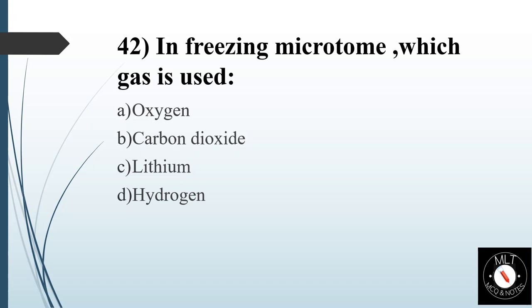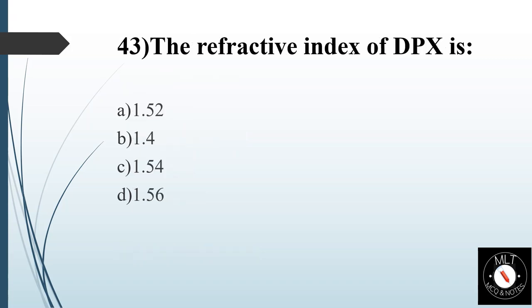Forty-second question. Anaerobic microorganism — which gas is used? Option A: Oxygen. Option B: Carbon dioxide. Option C: Lithium. Option D: Hydrogen. Answer is Option B: Carbon dioxide.